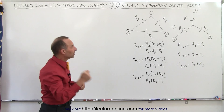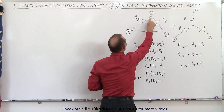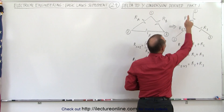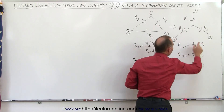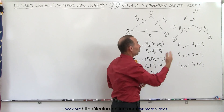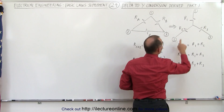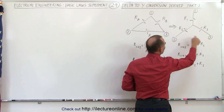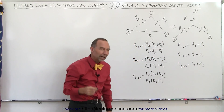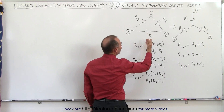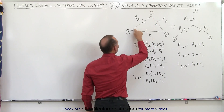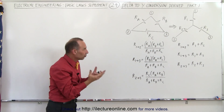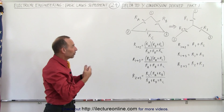We can calculate the equivalent resistance from one to two, from one to three, and from two to three in the delta circuit, and do the same for the Y circuit. On the Y side it's straightforward — there's only one path from one to two, so the total resistance is simply the sum of those two resistors. The same applies from one to three and from two to three. In the delta circuit, however, there are two parallel paths from one to two: through resistor A, or through resistors B and C in series.